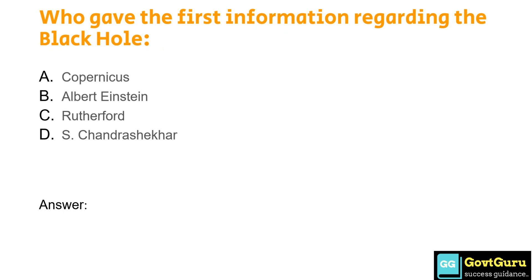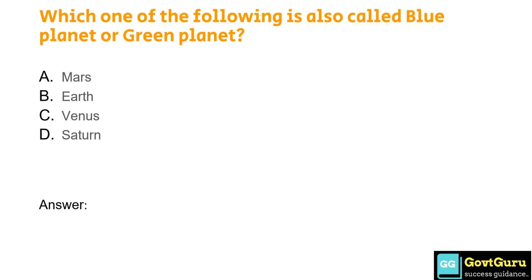Who gave the first information regarding the black hole? Option A: Copernicus, Option B: Albert Einstein, Option C: Rutherford, Option D: S. Chandrashekar. The answer is Option B, Albert Einstein. Which one of the following is also called the blue planet or green planet? Option A: Mars, Option B: Earth, Option C: Venus, Option D: Saturn. The answer is Option B, Earth.